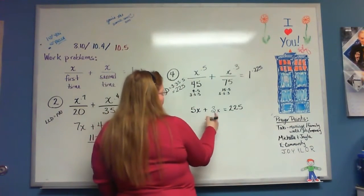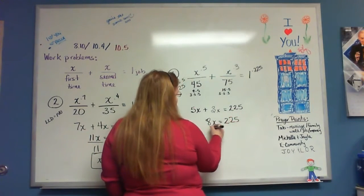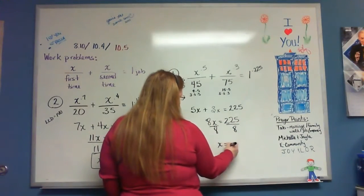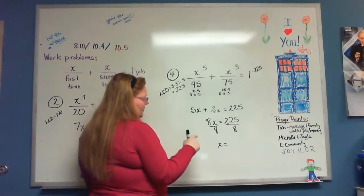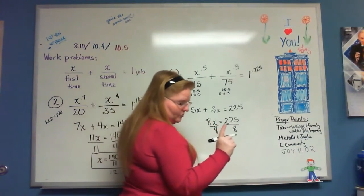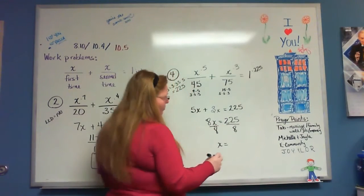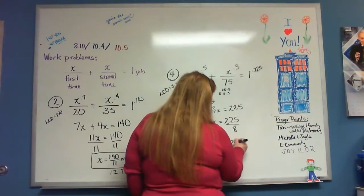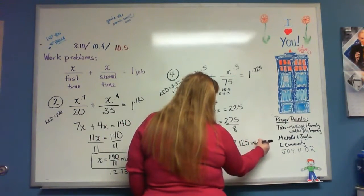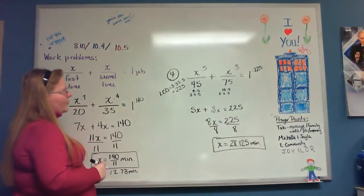5x plus 3x is 8x equals 225. Divide both sides by 8. It doesn't go evenly, but if you divide it on your calculator you get 28.125 minutes.